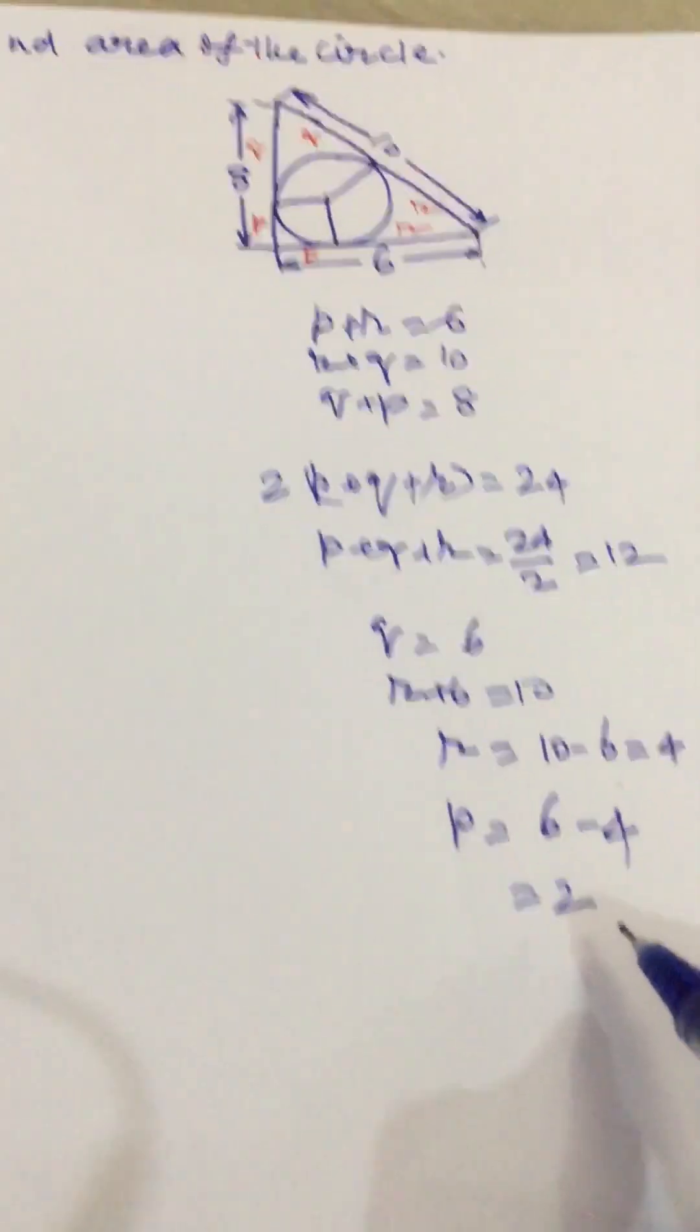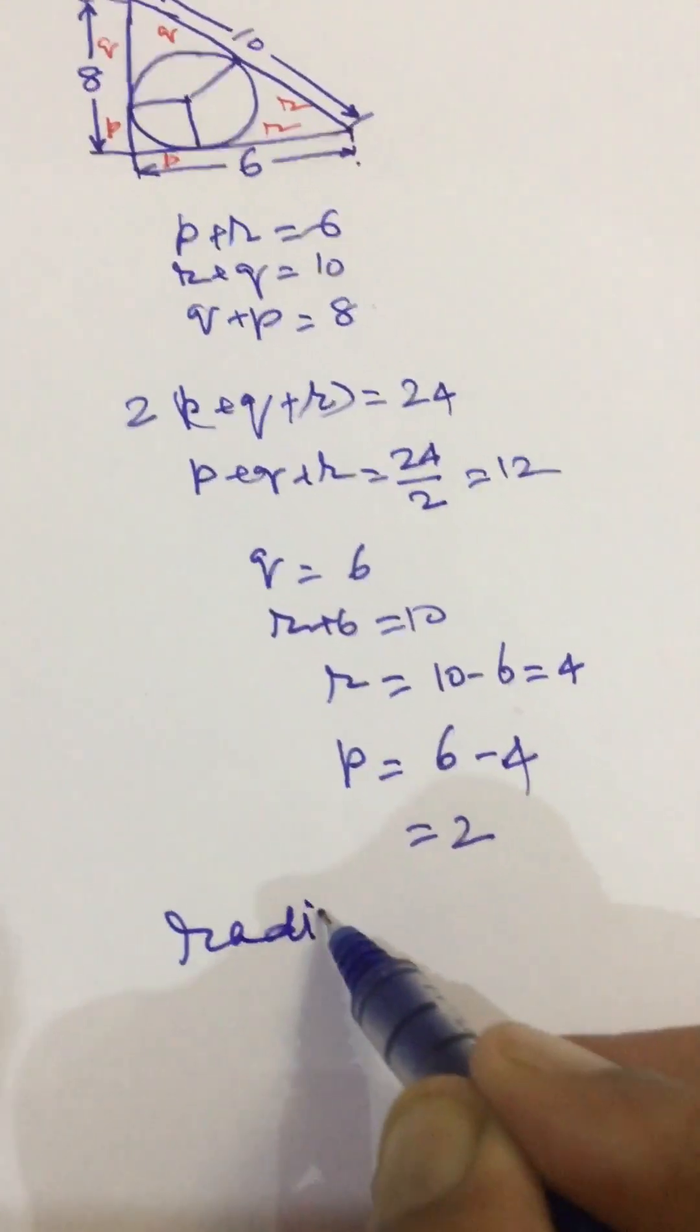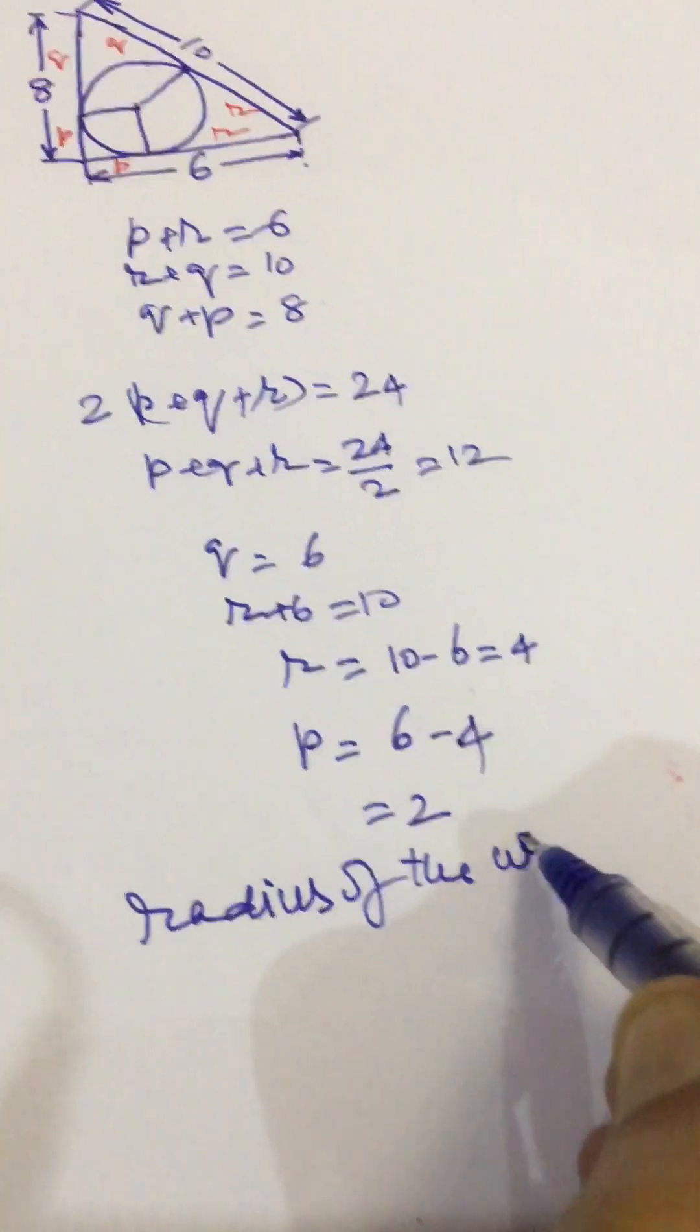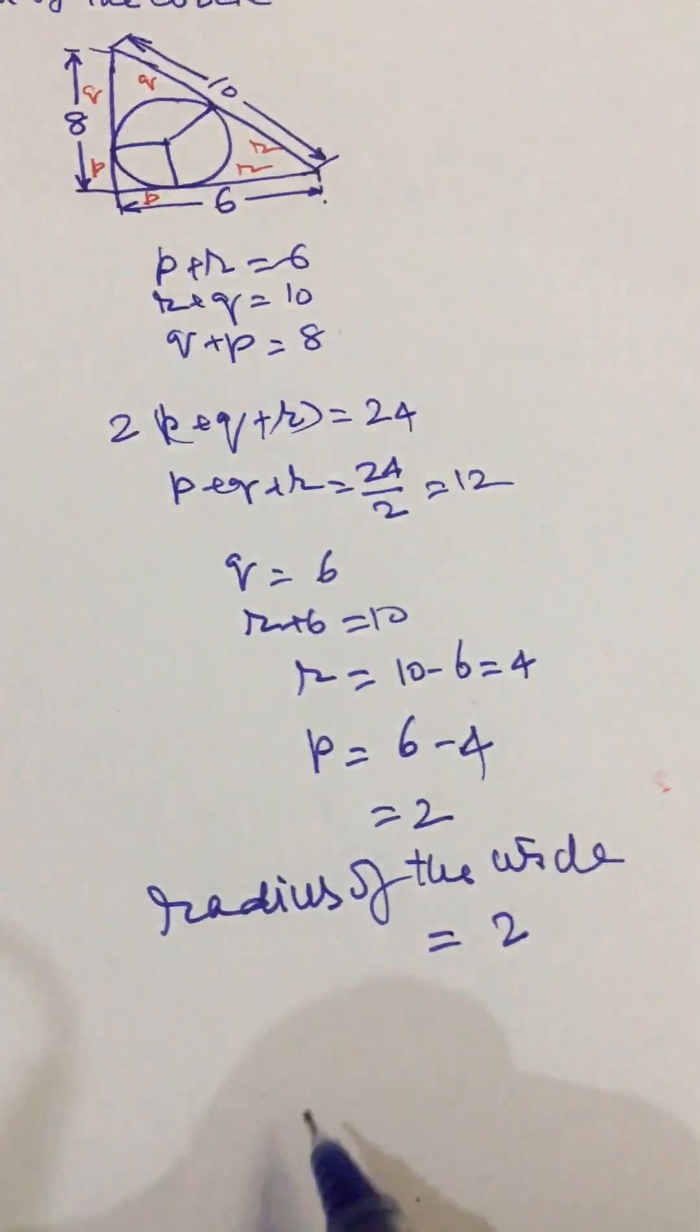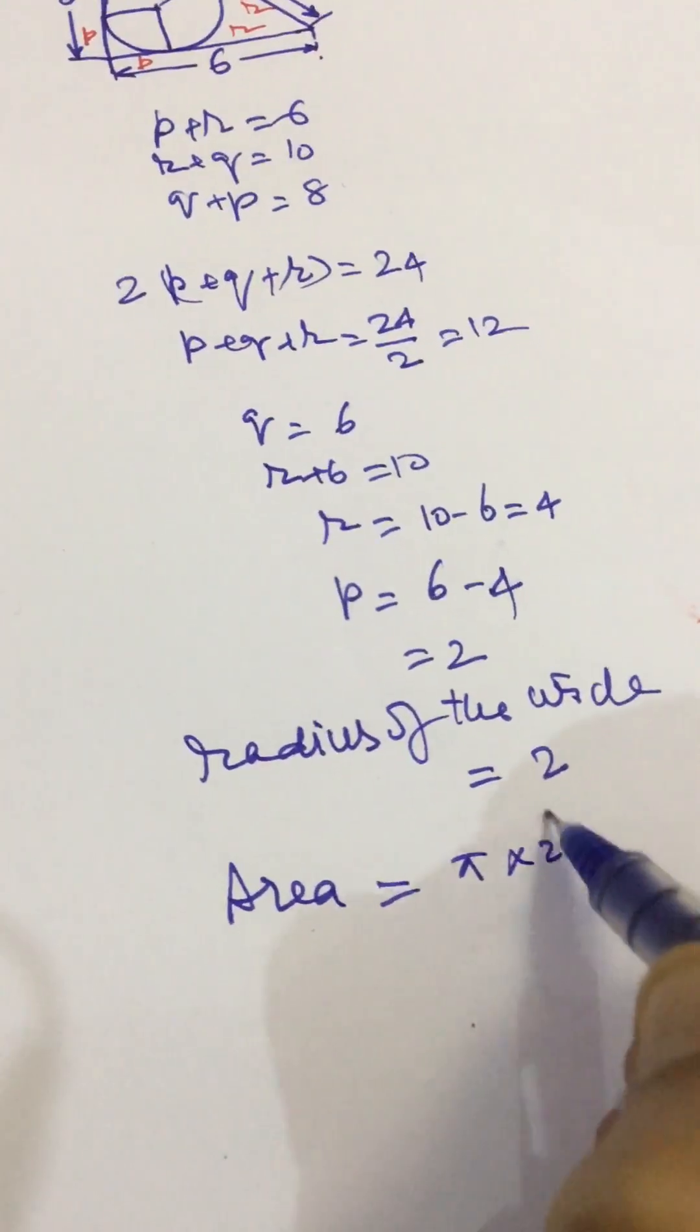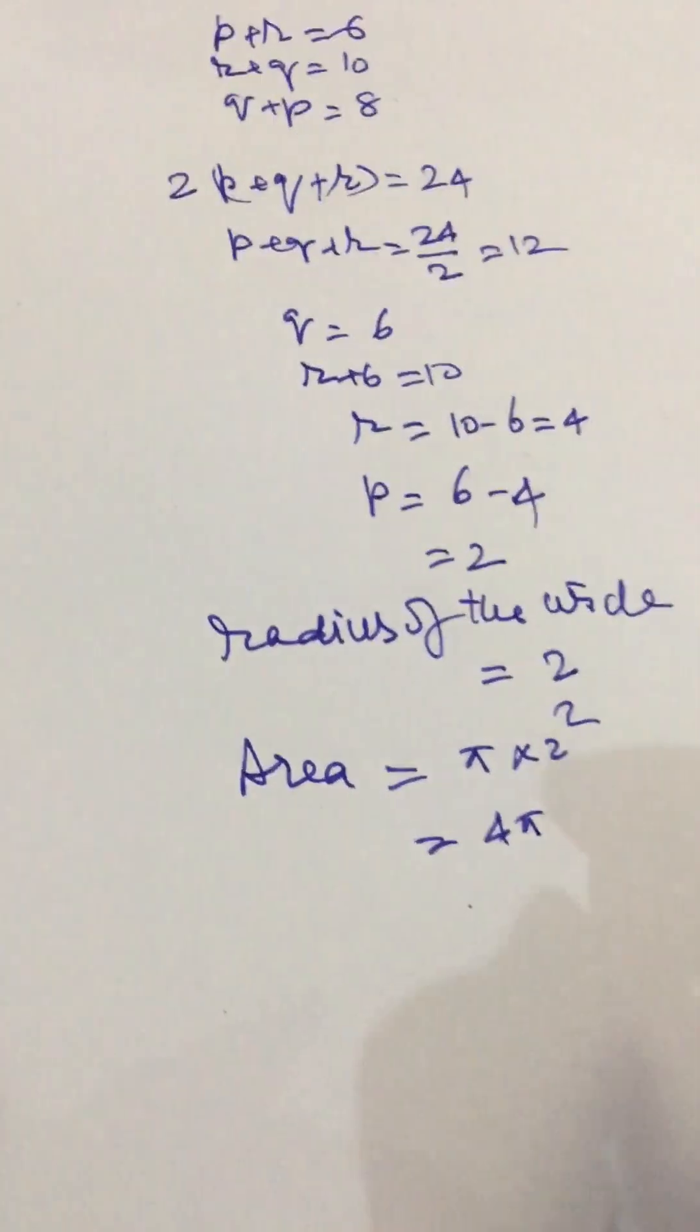P is 2, so the radius of the circle is 2. The area will be equal to π times 2 squared, equal to 4π. And this is our answer.